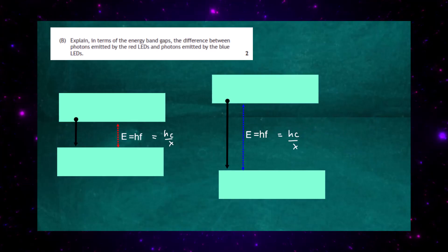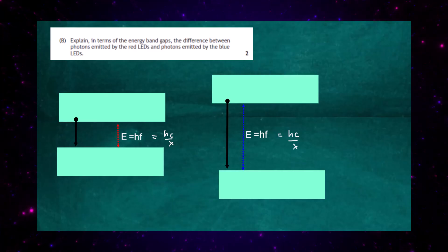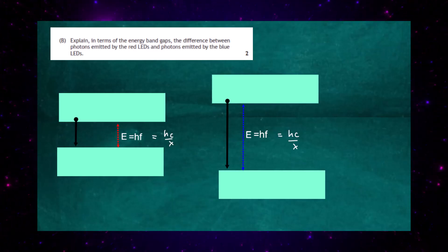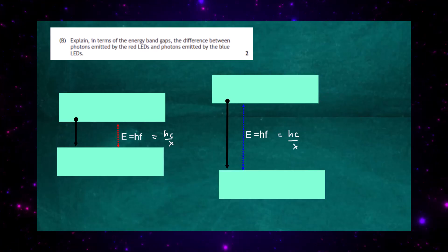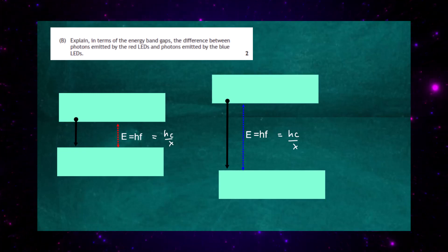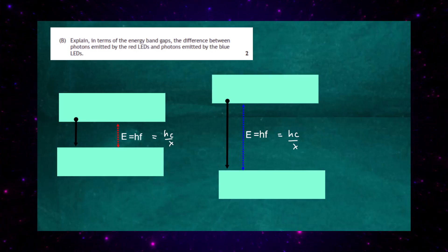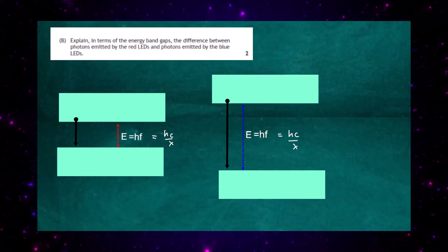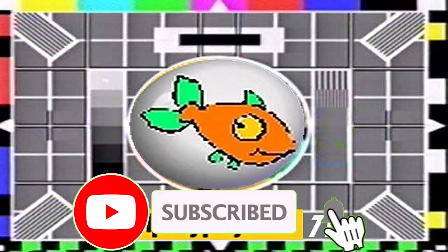In summary: for red LEDs, the band gap is much smaller, which produces a longer wavelength photon — red light. For the blue LED, the band gap of the transition is much bigger, giving rise to a larger energy, which means the wavelength must be smaller — and a smaller wavelength means blue light. That is the full explanation in terms of band gaps.